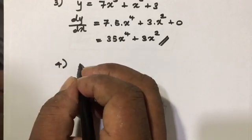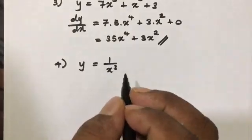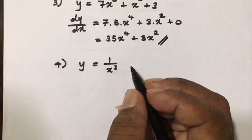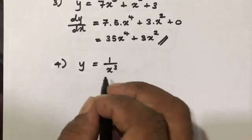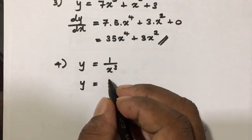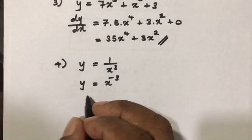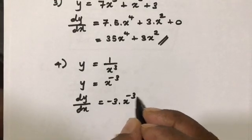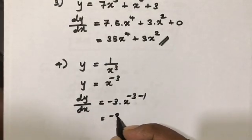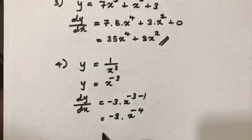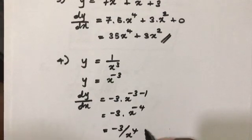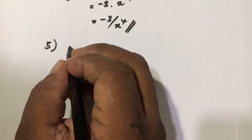Example number four: y equals 1 over x cubed. We move x cubed to the top, changing positive 3 to negative 3, so y equals x to the minus 3. Using the power rule: dy/dx equals minus 3 times x to the minus 4. Moving to the bottom, the answer is minus 3 over x to the fourth.